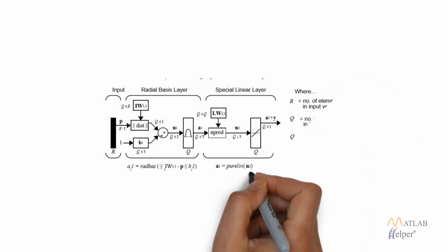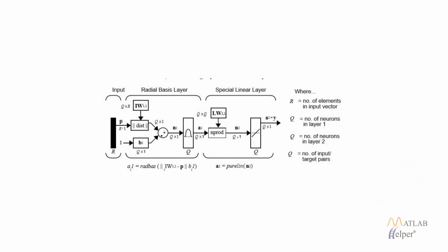Then we have the generalized regression network, and the figure for the same is shown on the screen. It also contains an input matrix and a radial basis layer, but in the output layer we have certain modifications. As you can see, we are using n product.